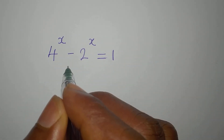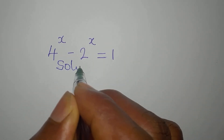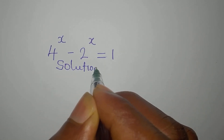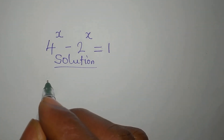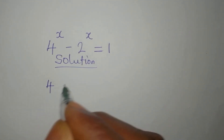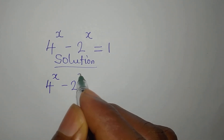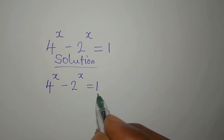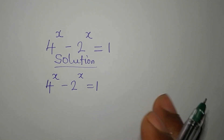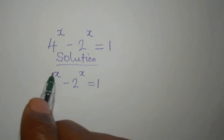Hello everyone, let's provide the solution to this problem. We have 4 to the power of X minus 2 to the power of X equals 1. What do we do from here? We are going to break this 4 down.